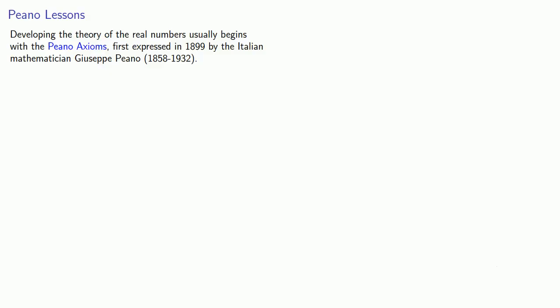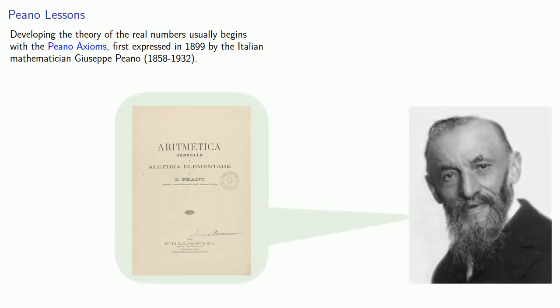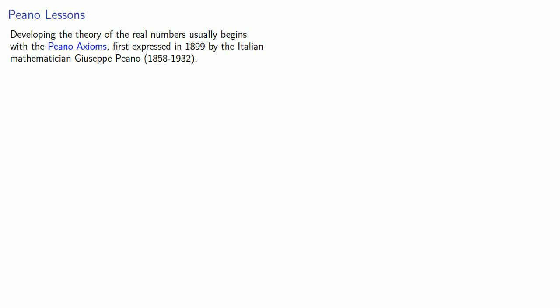Developing the theory of the real numbers usually begins with the Peano axioms, first expressed in 1899 by the Italian mathematician Giuseppe Peano. There's a couple of different versions of the axioms, but one version is the following.